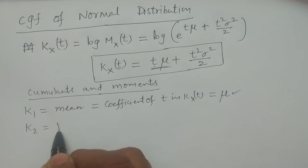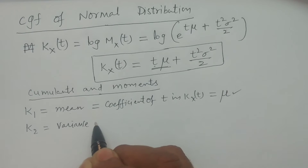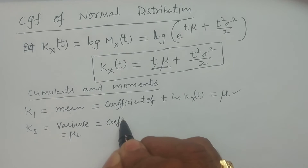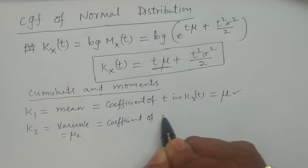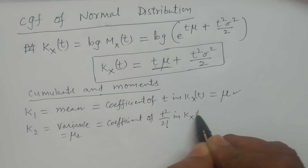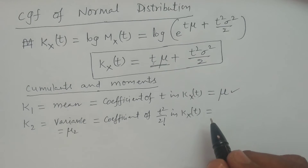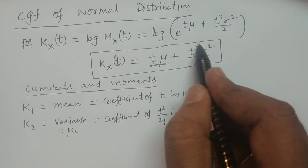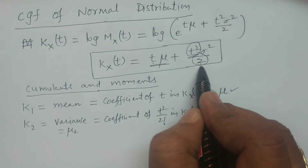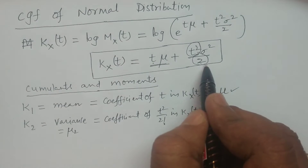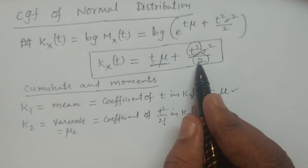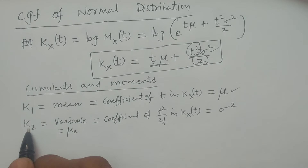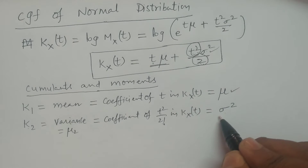Next, k₂ is the second cumulant, which is nothing but variance μ₂. It is equal to the coefficient of t²/2! in K(x,t). In K(x,t), the term is t²σ²/2, and t²/2 is t² divided by 2 factorial. So the coefficient is σ². Therefore variance μ₂ equals σ², the variance of the normal distribution.